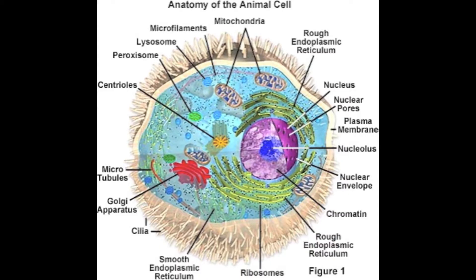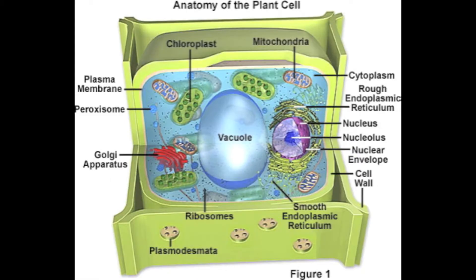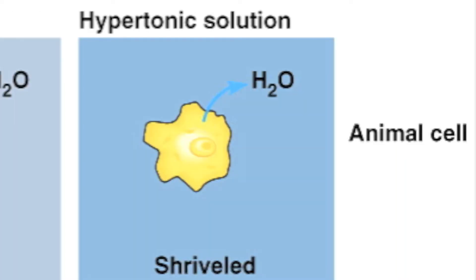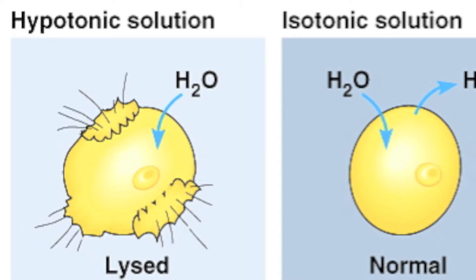Now remember, there are two types of eukaryotic cells: animal and plant cells. For all of these cells, there are three types of environments: isotonic, hypertonic, and hypotonic.